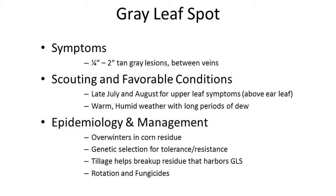Some management practices regarding gray leaf spot: number one would be rotation, as this disease overwinters in corn residue. Also, genetic selection for tolerance to gray leaf spot is a good management tool. In corn-on-corn rotation, tillage and residue incorporation helps break up the residue that harbors gray leaf spot.